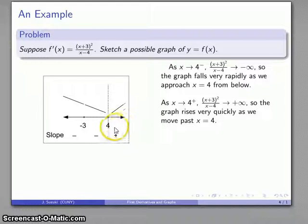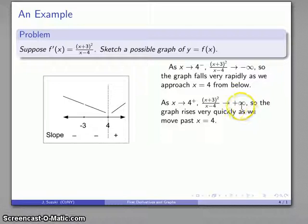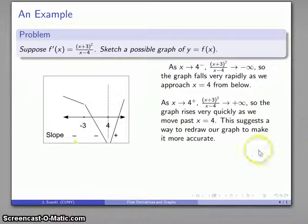The same sort of analysis as x gets close to 4 from above, our numerator still close to 49, our denominator close to small but positive numbers. So 49 over small positive gets us large and positive, so the graph is rising positive very quickly infinity as we move past x = 4. Rather than having these rather modest falling or rising lines I'm going to have much sharper falling and rising lines. So my graph is falling much more rapidly as I get close to 4 and rising much more rapidly as we move away from x = 4. So there's our stick figure sketch of a graph with derivative (x+3)²/(x-4).